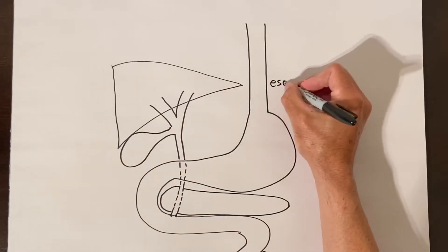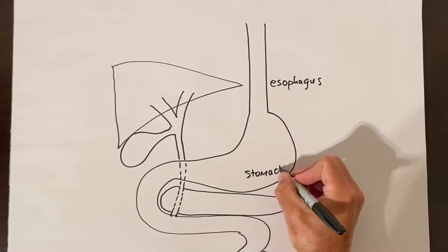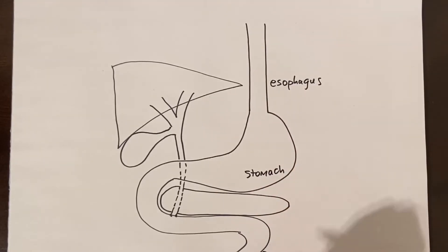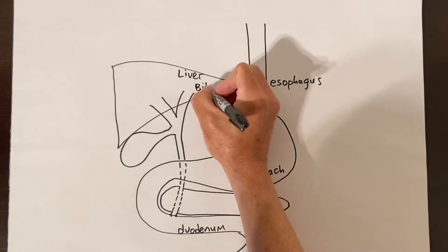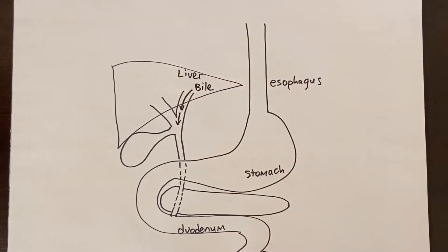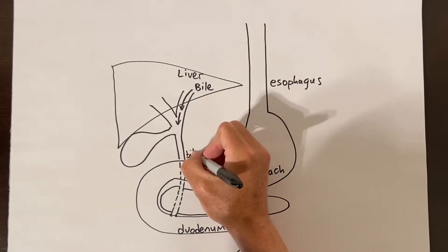The liver sits in the right upper abdomen. The liver makes bile which is the green liquid that helps you digest your food. The bile flows out of the liver in a tube called the bile duct which comes down and empties into the duodenum through a muscle called the sphincter of Oddi.